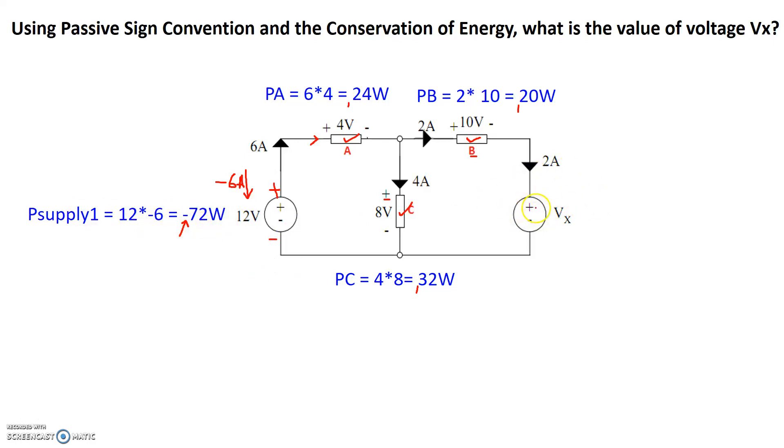Now let's take a look at this voltage source, Vx. The voltage source has a positive terminal on the top and negative on the bottom. And we see that the current is flowing into the positive. So it's basically following the passive sign convention. So since it's following passive sign convention, we simply write down power supply 2's power is equal to 2 times Vx.